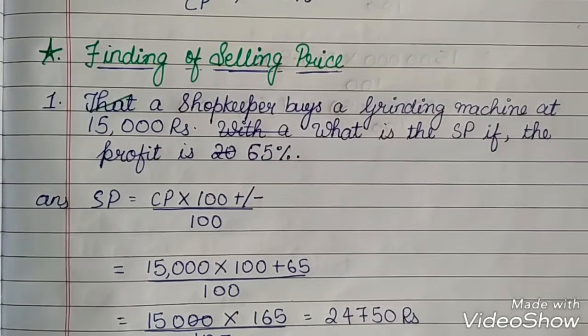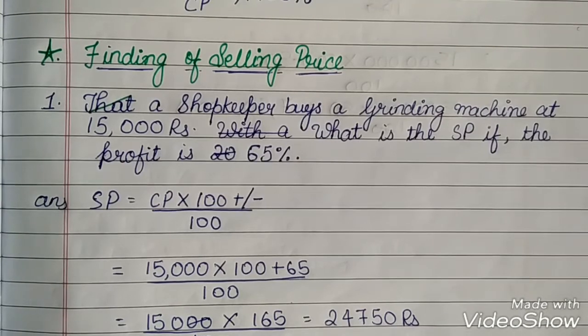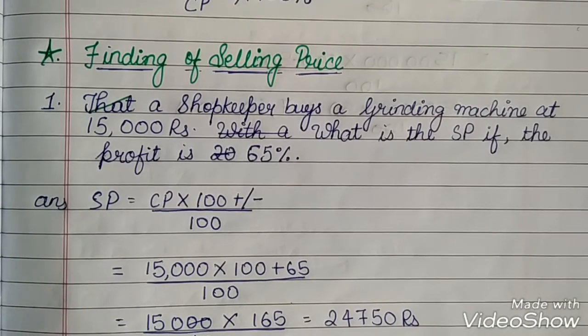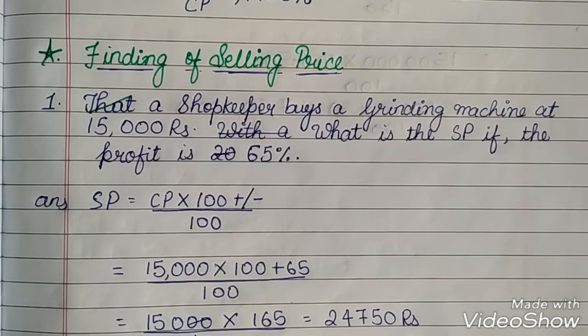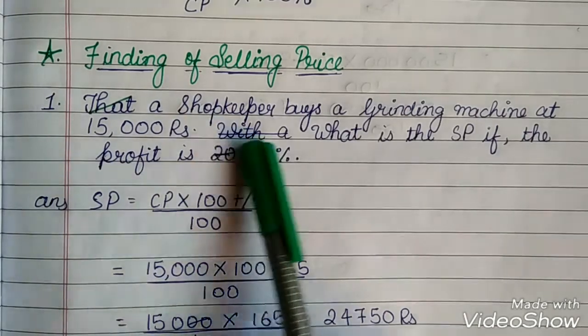Let's come to the main point, which is finding of selling price. Let's take one example. A shopkeeper buys a grinding machine at 15,000. What is the selling price if the profit is 65%?